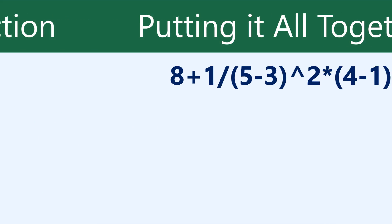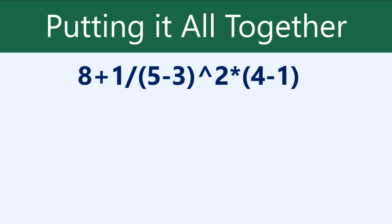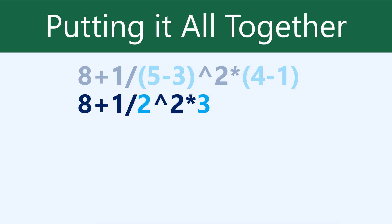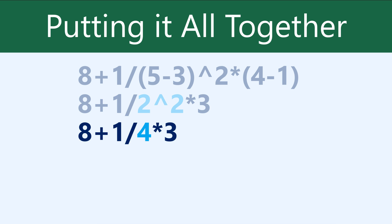Now let's put them all together. This formula may look really complicated, but we're just going to go step by step through the order of operations, and you'll see that it's really not that bad. We'll start with the parentheses and calculate each of these to get 2 and 3 — and already the formula is starting to look simpler. Next, we'll look for any exponents, and there is one: 2 to the second power. When we calculate it, it becomes 4.